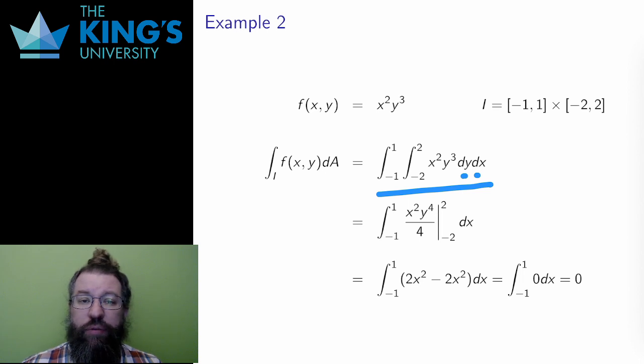I do the y antiderivative first to get y to the 4 over 4, and I evaluate on the bounds, replacing y instead of x. Then I get this integral, which I would integrate in x and evaluate in bounds, but the integral here is already zero, so there's no work to do when the integral is already at this stage zero.